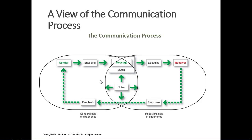When organizations develop messages, they go through pretty much the same process. The sender — say, Nike — encodes the message into a format the receiver will understand. Decoding is how the receiver understands it. Encoding could be having the right spokesperson, like LeBron James as the face of Nike, or developing a character like the Geico Gecko or caveman — a way of encoding the message so it can break through the clutter.